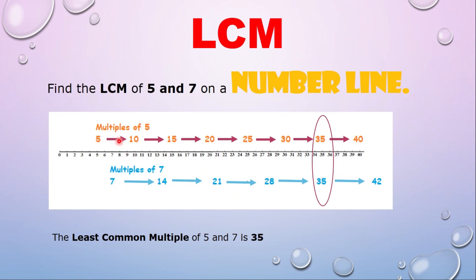Similarly, the multiples of 7 are 7, 14, 21, 28, 35, and 42. What is the common multiple between 5 and 7? It is 35. So the least common multiple of 5 and 7 is 35. This is how you find the LCM on a number line.